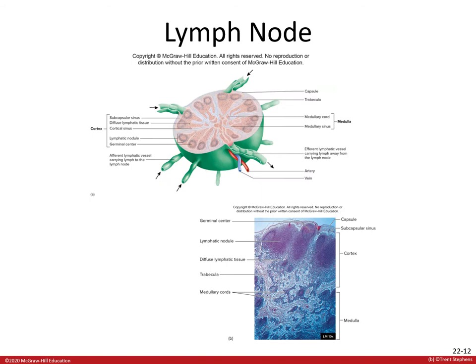Here we can see an illustration of a lymph node with the capsule surrounding the outside in green, and a histology image showing lymphatic tissue with the cortex, medulla, and capsule.